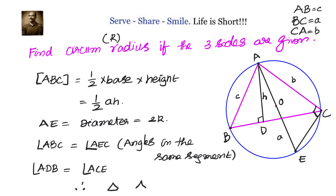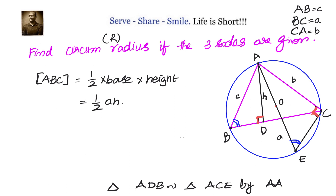The approach is: use Heron's formula for the area, which also equals ½ × base × height. We want to write this height h in terms of the circumradius R. Since triangles ADB and ACE are similar by AA similarity, corresponding sides are proportional: AD/AC = DB/CE = AB/AE.